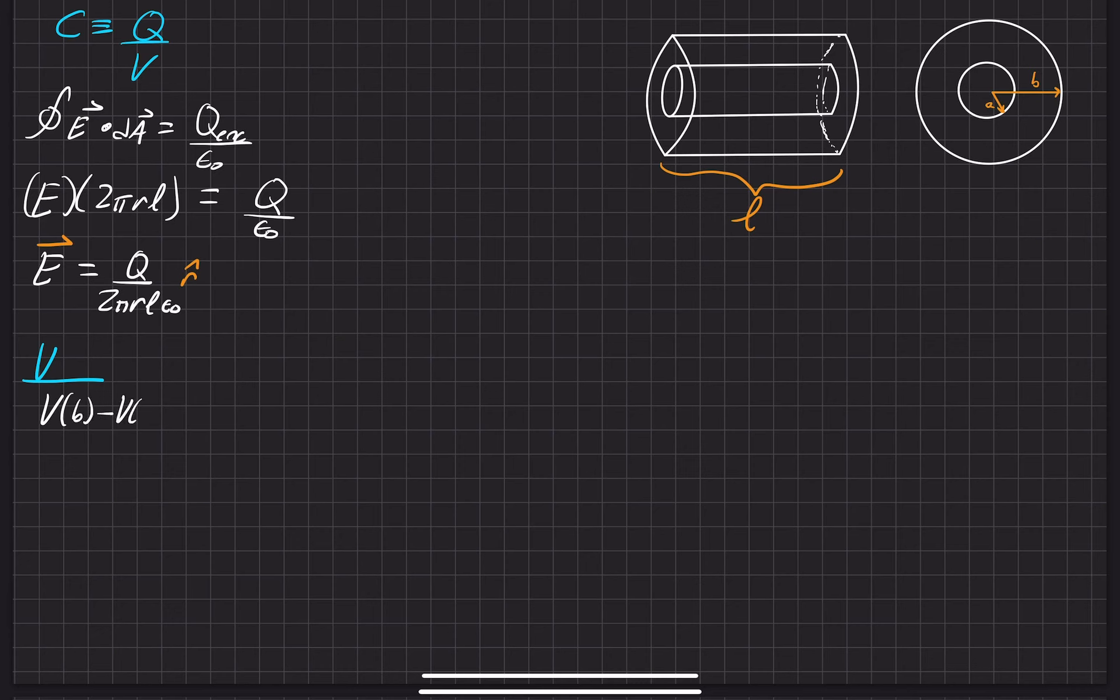V_B minus V_A equals the negative spatial integral from point A to B, the electric field dotted with our path that we choose. We'll just take the path straight from here to here, a direct path.